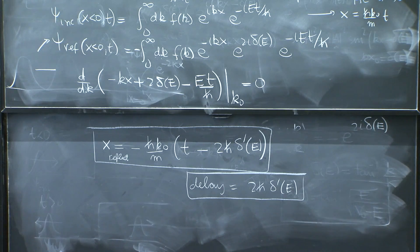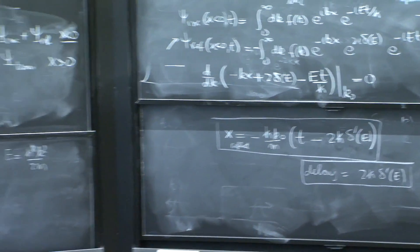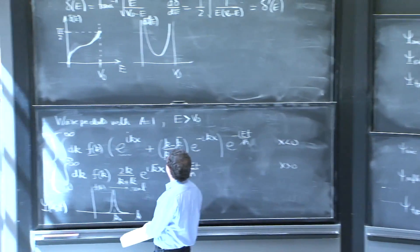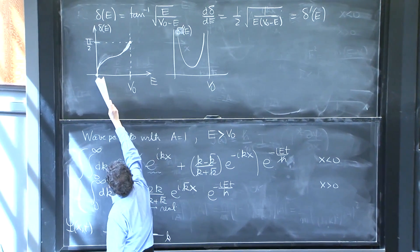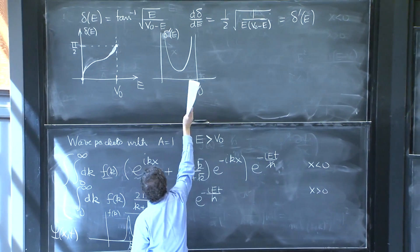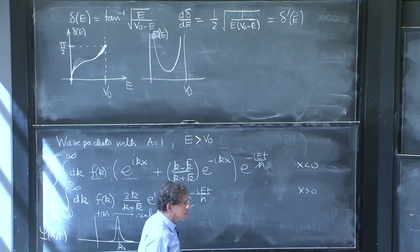Now, this derivative, we've plotted it there, delta prime of e. You get a big delay for low energy, for energies near v naught. And in the middle, it's not so big.